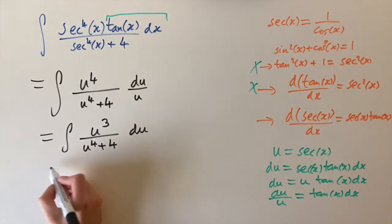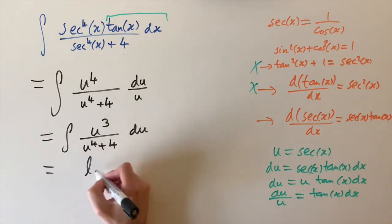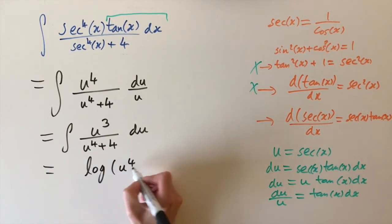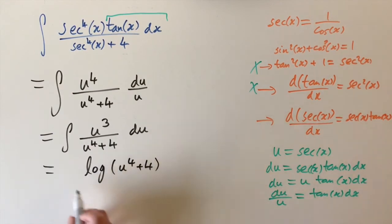Which means our answer is going to be something of the form, the logarithm of u to the power of four plus four. We still need to think about the constants.